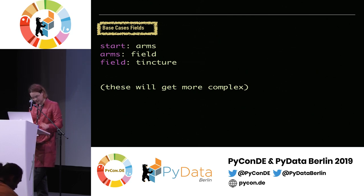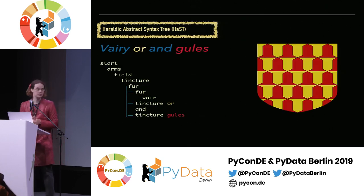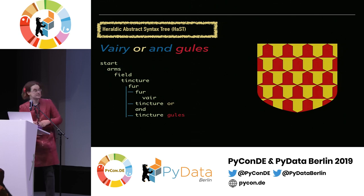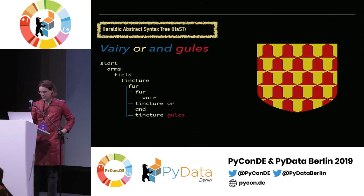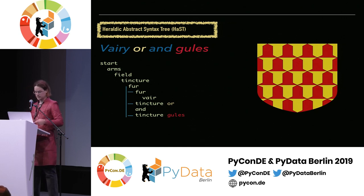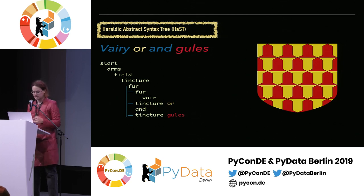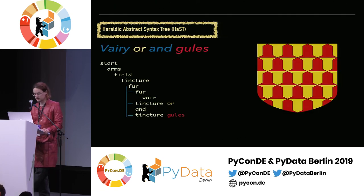So arms are a single field, and a field is a single tincture. Here's a fully parsed abstract syntax tree for a slightly complex set of arms. We can see it's a tree structure — the arms are a field, the field is a tincture, and then you know what the fur is, and then you've got the two different tinctures. So if you want to start parsing that and generating an image, or comparing arms, you now have a computerized understanding of that — a structured form — which is our goal here. When you formalize your own DSL, that's when you can start using it to understand your language.